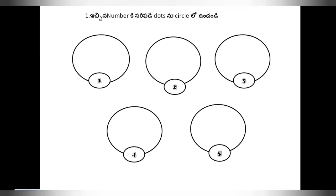Today we will learn about worksheet number 2 of mathematics. Here there are 5 circles. Each circle has a number: 1, 2, 3, 4, 5. Here is the number 1, so we have to put here 1 dot.